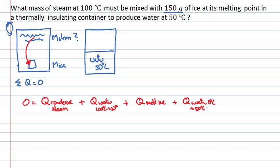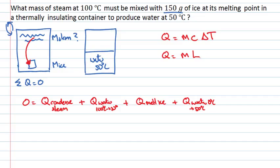Now we need to find what each of these terms are. Two of them are heats associated with changing the temperature of an object, given by mc∆T — depending on mass, specific heat, and temperature change. The other two deal with phase changes, depending only on mass and the type of phase change: a latent heat of vaporization and a latent heat of fusion.